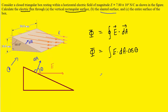Moving on to part B, to calculate the flux through the slanted surface, we draw a different perspective of the triangular box, looking at the right triangle from the side. The electric field points to the right as in the original diagram. The area vector points away from the interior of the triangular box and must be perpendicular to the slanted surface. We need to find the angle theta between the area vector and the electric field vector.